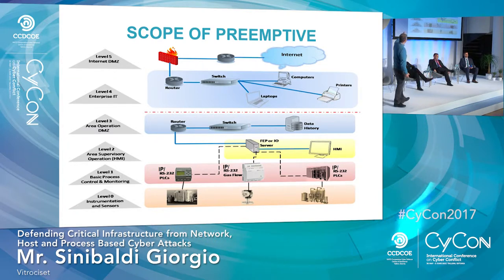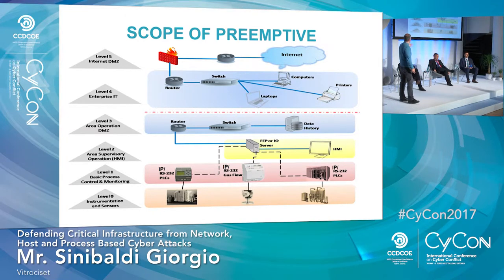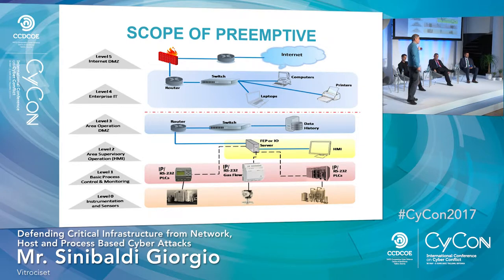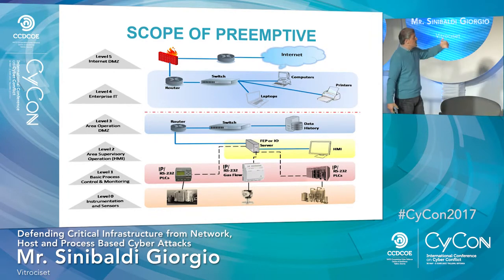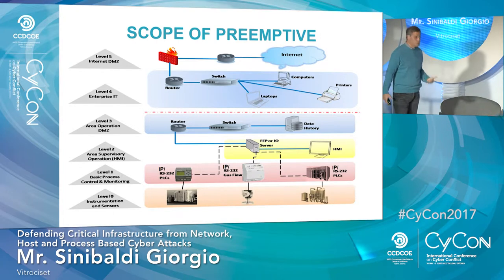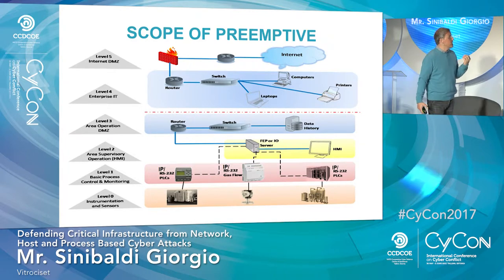You go down through the various levels of the SCADA system where you find the final equipment, which may be pumps, valves, everything involved with the distribution of water, gas, and utilities. This part, from level four to level zero, is where attackers can gain access and where they make damage.